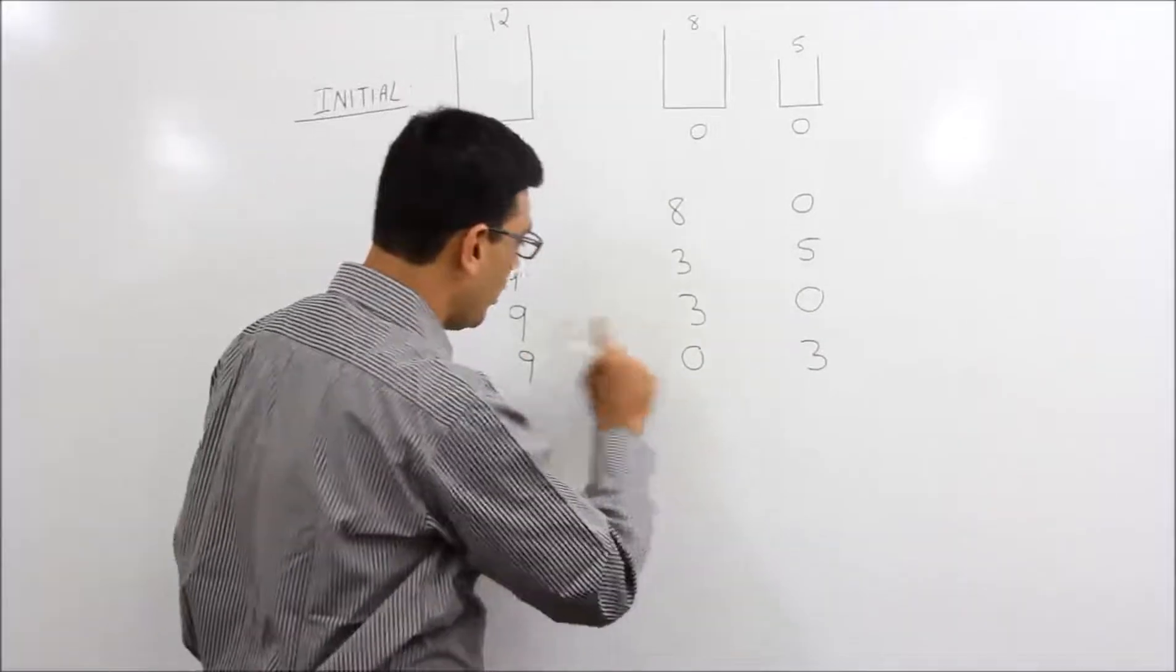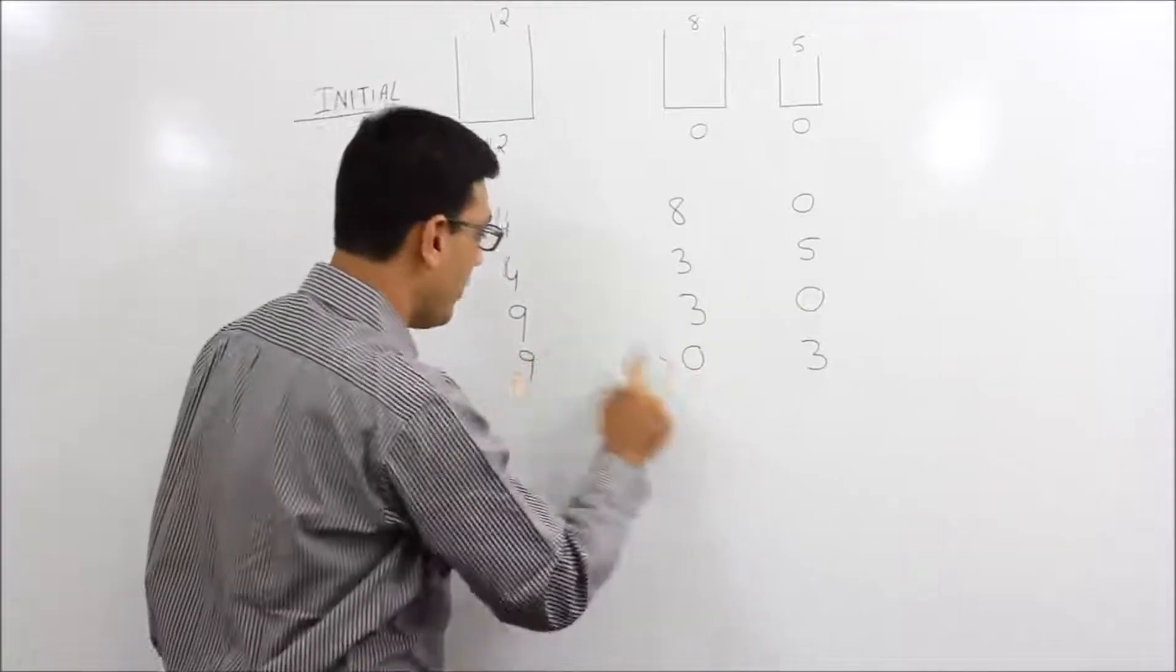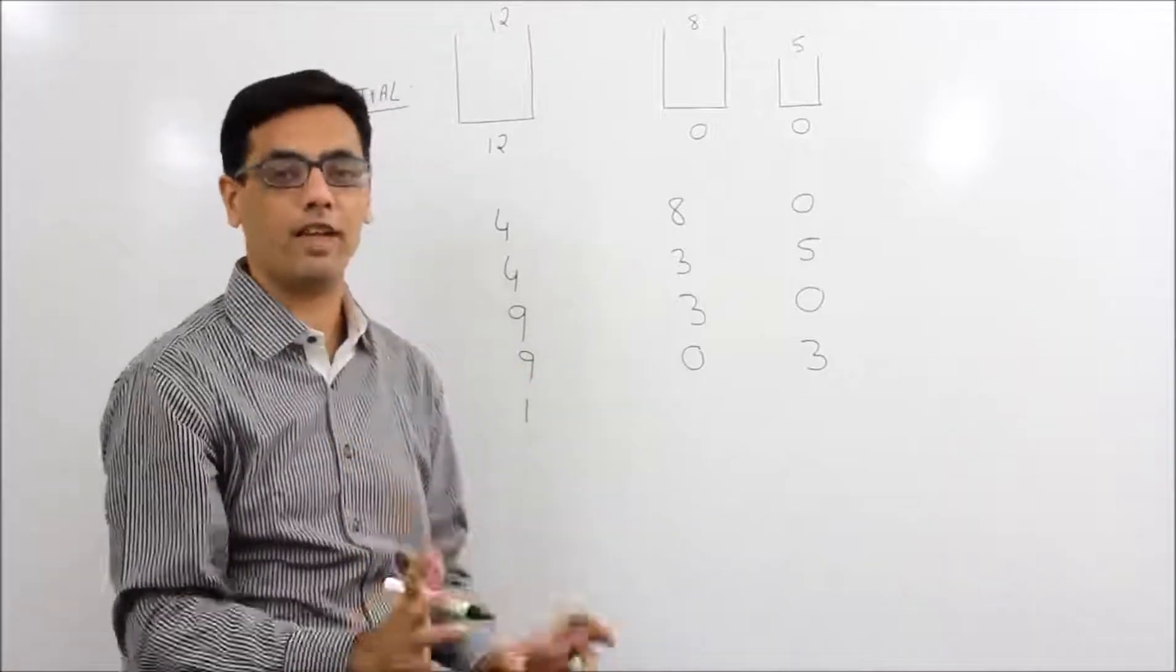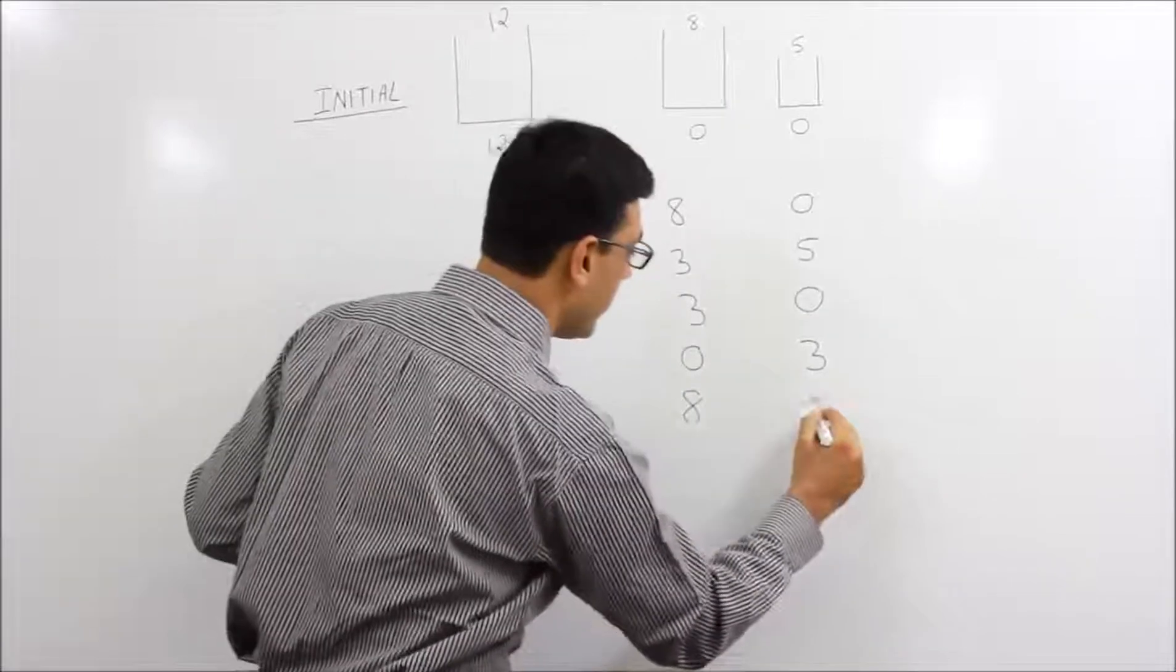Then we put this 9 over here. That is the basic idea of doing all these things. So when we put over here, we get 1 here. The whole idea is to somehow get 1. And we get 8 here as it is capacity 8, and this is 3 as it is.